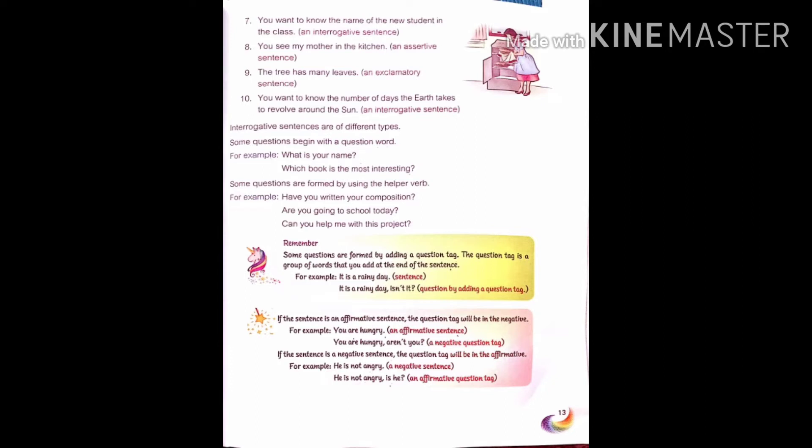If the sentence is a negative sentence, the question tag will be in the affirmative or positive. For example, 'He is not angry' is a negative sentence, so we will add an affirmative or positive question tag with it. Because the statement is already negative — 'He is not angry' — we will add a positive question tag: 'Is he?' So, 'He is not angry, is he?'